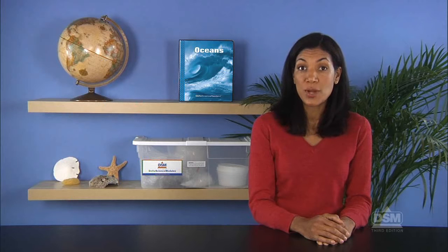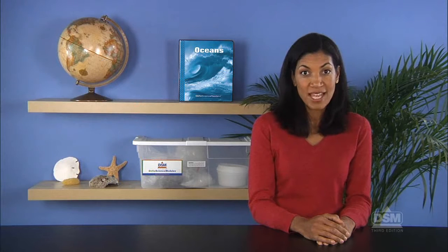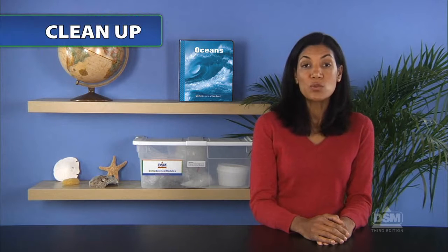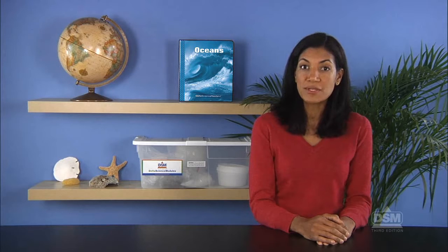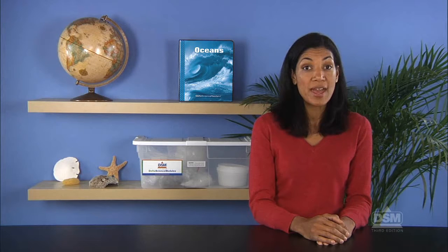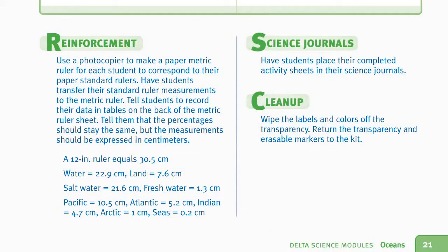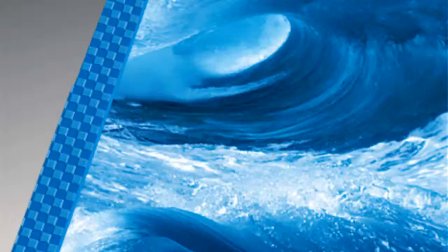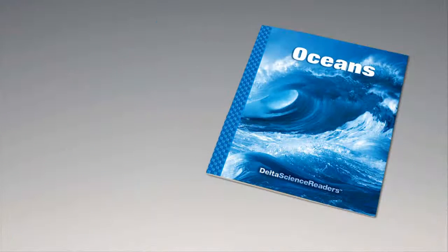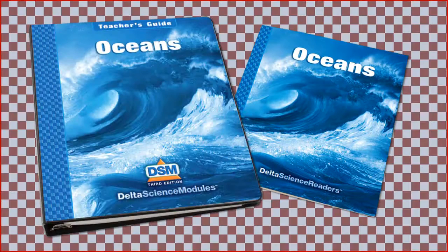Finally, inform the class that in the next activity they are going to learn about another way in which ocean water moves — with the tides. To conclude this activity, remove the rocks and dump the water from the containers. Rinse and dry the cups and containers, then return them along with the food coloring to the kit. For science background, reinforcement activities, curriculum connections, and information about the Delta Science Reader, please consult your DSM Teacher's Guide.